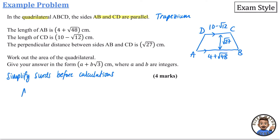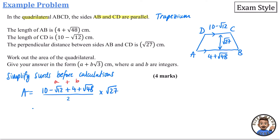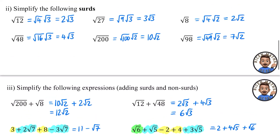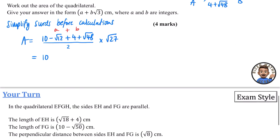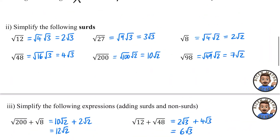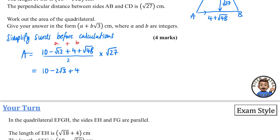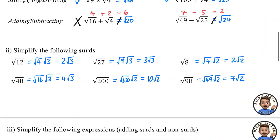Simplify the surds first before calculating. The area formula gives us: [(10 − √12) + (4 + √48)] ÷ 2 × √27. Now √12 = 2√3, √48 = 4√3, and √27 = 3√3. Substituting: [10 − 2√3 + 4 + 4√3] ÷ 2 × 3√3.